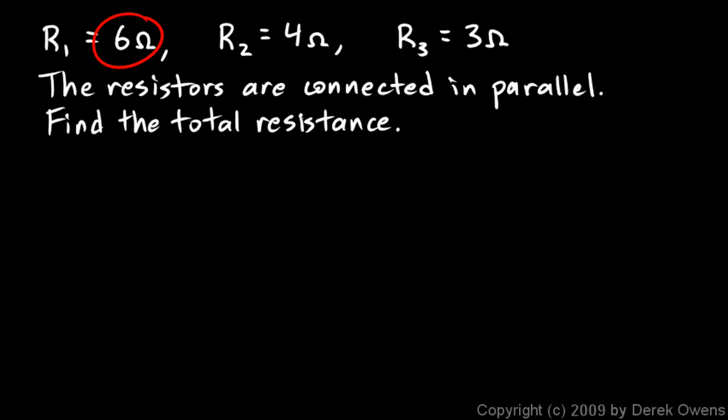We're told that resistor 1 is 6 ohms, resistor 2 is 4 ohms, and resistor 3 is 3 ohms, and they're all connected in parallel. We want to find the total resistance and we'll do that with this formula: 1 over R equals 1 over R1 plus 1 over R2 plus 1 over R3. Let's put in the numbers.